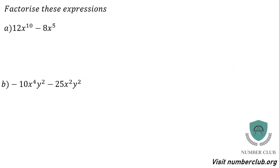The first type of factorising you should really have been able to do in Year 8 or Year 9. We're going to factorise 12x to the power of 10 minus 8x to the power of 5. I tend to write my brackets directly underneath my question and look at the numbers first — 12 and 8. We need to think of the highest number that goes into both: their highest common factor, which is 4, not 2.